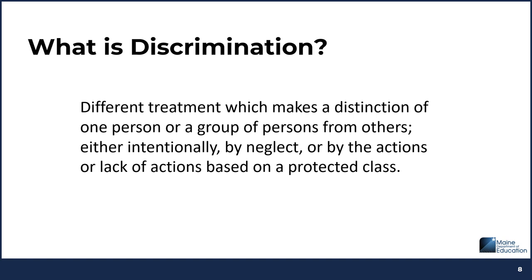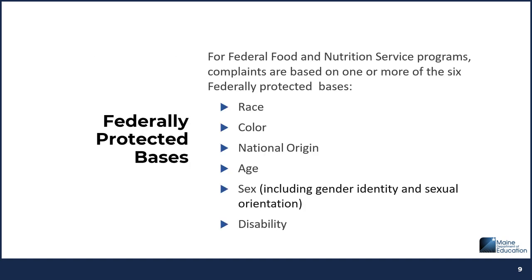What is discrimination? Discrimination is different treatment which makes a distinction of one person or a group of persons from others, either intentionally, by neglect, or by the actions or lack of actions based on a protected class. For federal food and nutrition service programs, complaints are based on one or more of the six federally protected bases: race, color, national origin, age, sex — including gender identity and sexual orientation — and disability.